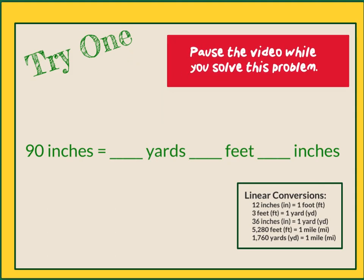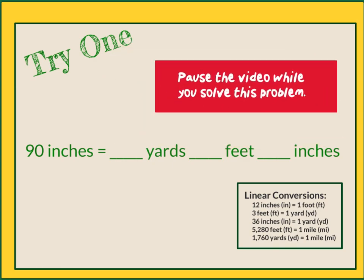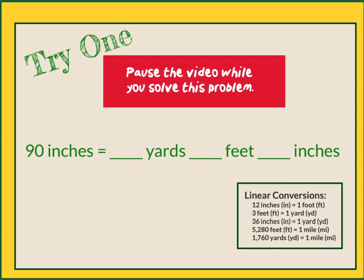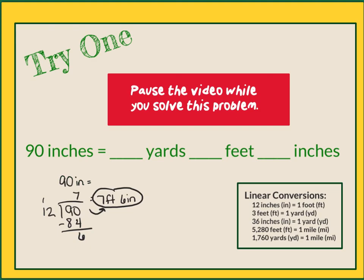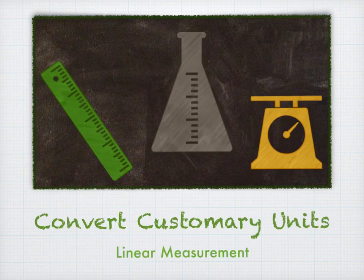One more problem to try on your own. Pause the video and unpause it when you have your answer. When I change 90 inches into feet, I was able to get 7 feet 6 inches. So I can put the 6 inches over here. And then 7 feet, if I convert that into yards by dividing by 3, I would get 2 yards with 1 foot left over, giving me 2 yards, 1 foot, 6 inches. Thank you for learning about converting customary units for linear measurement with us today. Next time we will be focusing on capacity.